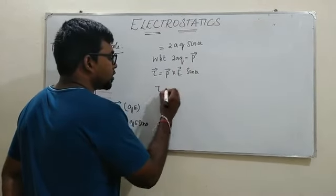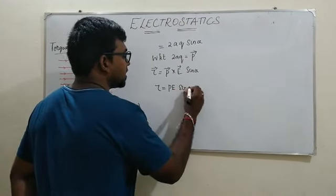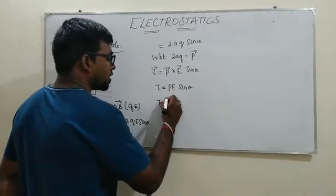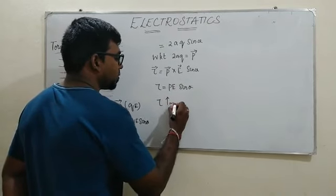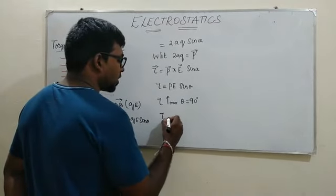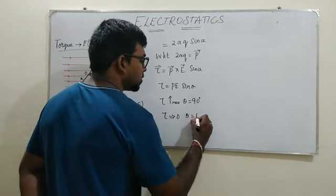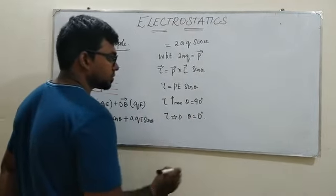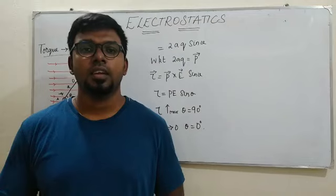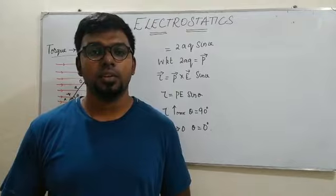Considering the magnitude of torque alone, torque τ equals pE·sinθ. The torque is at its maximum when θ equals 90° and zero when θ equals 0°. Let us continue with electrostatic potential and potential energy in the next video.